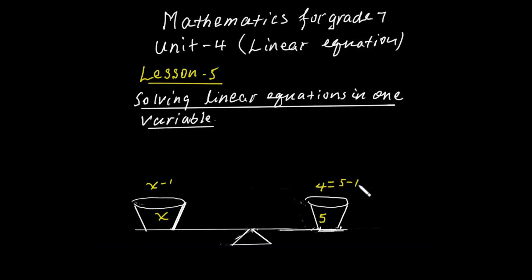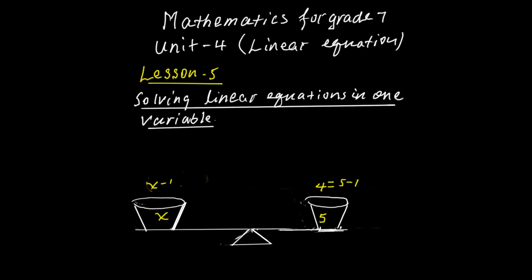We subtract 1 from both sides. You can see the item in the box. We have the number of x minus one.